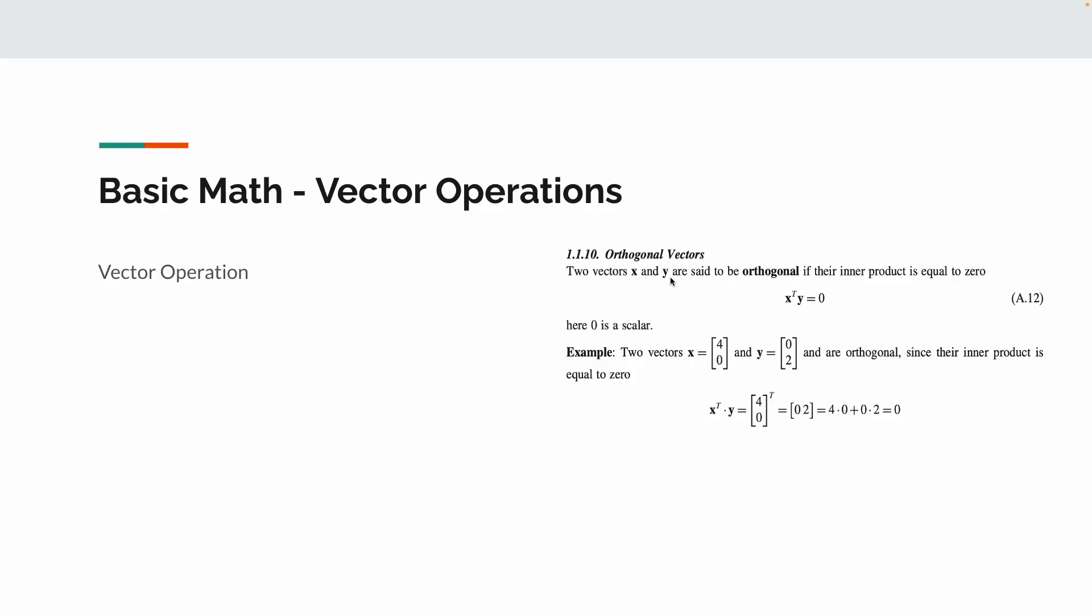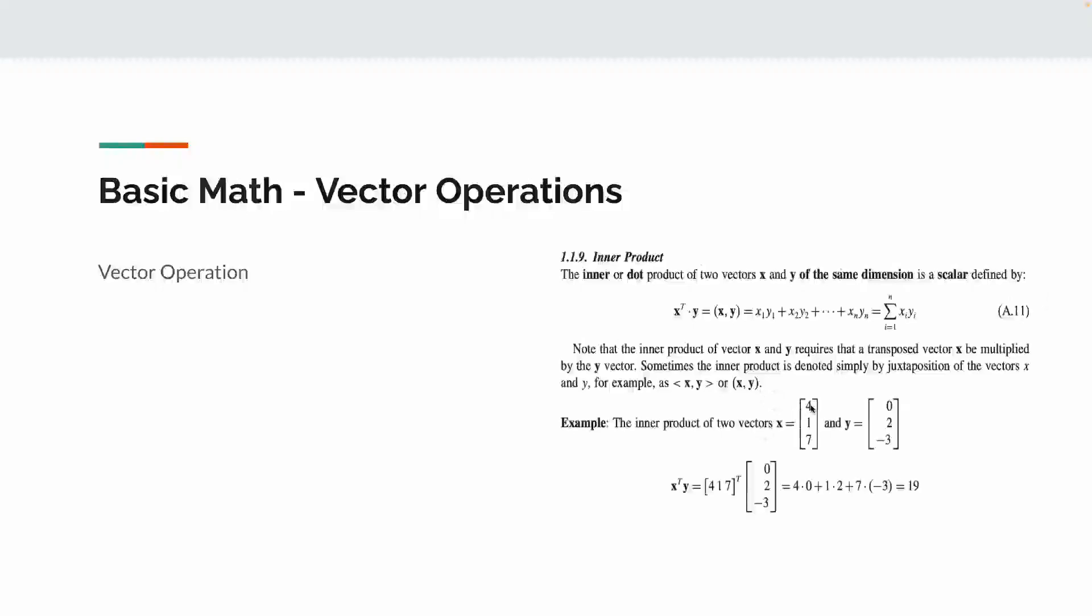Two vectors are orthogonal if we do a dot product and the value becomes zero. One thing to notice: when you do the dot product, you have a scalar. The dot product of two vectors gives you a scalar, meaning just one real number.